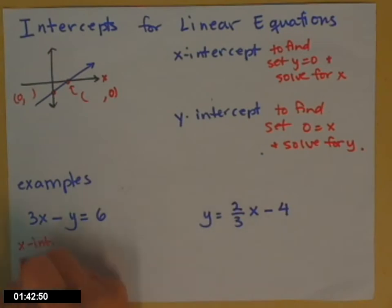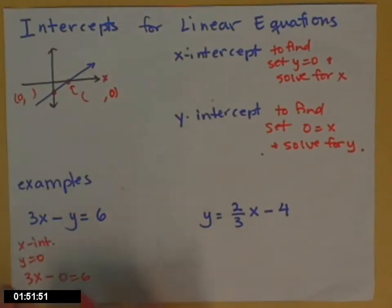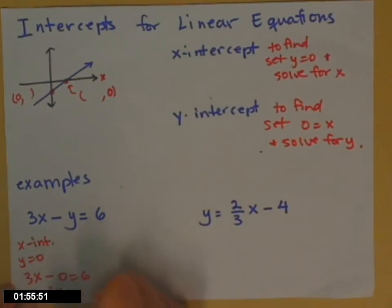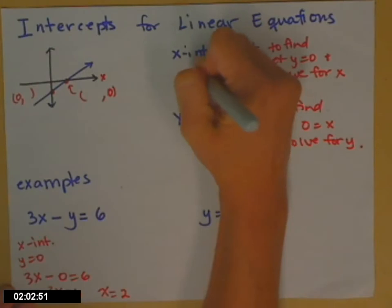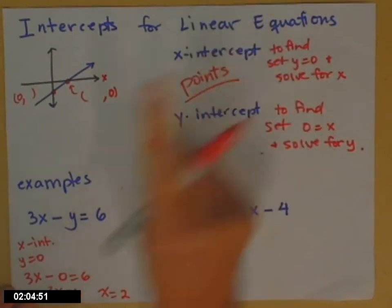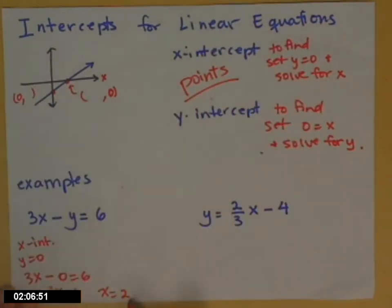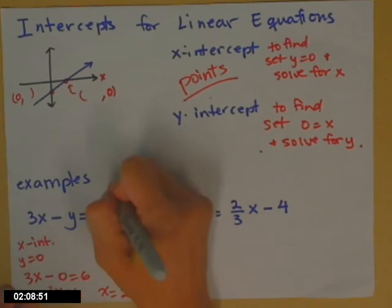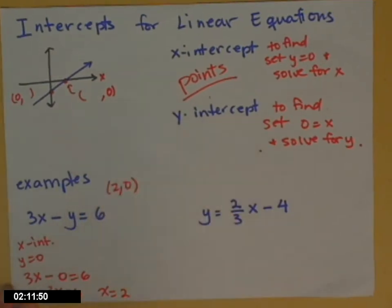So to find the x-intercept, we set y equal to 0. So 3x minus 0 equals 6. So now we have to solve for x. 3x equals 6. x equals 2. Now be careful, because an intercept is a point. Right? They're points. So an x-value of 2 is really the point (2,0). This is the answer for the intercept question.